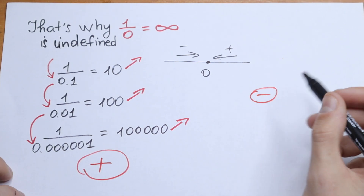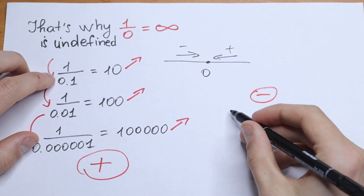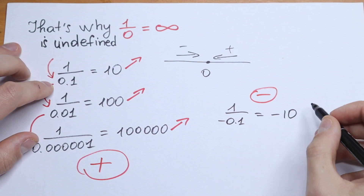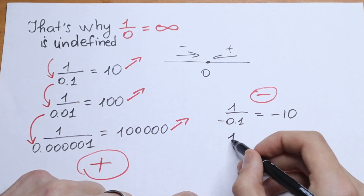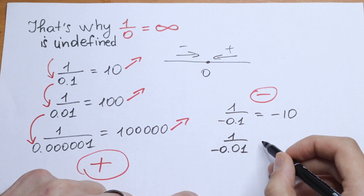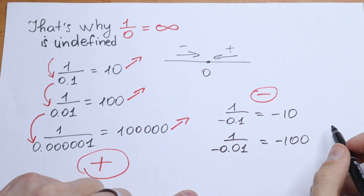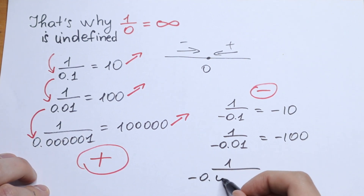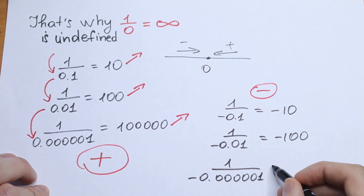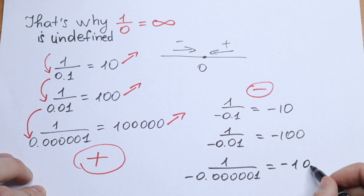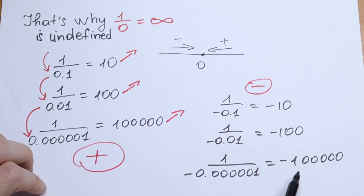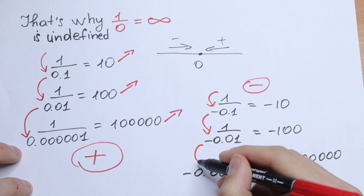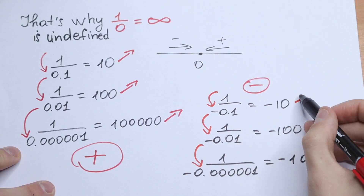Let's get closer and closer from the negative side. We will have 1 divided by minus 0.1, which gives minus 10. Getting closer: 1 divided by minus 0.01, we will have minus 100. And the last step — 1 divided by minus 0.00001. As you can see, we will have minus 100000. So if we are getting closer and closer from the negative side to 0, our answer grows to minus infinity.